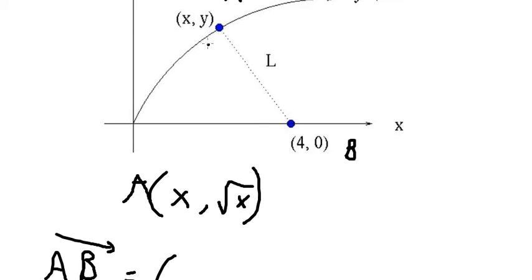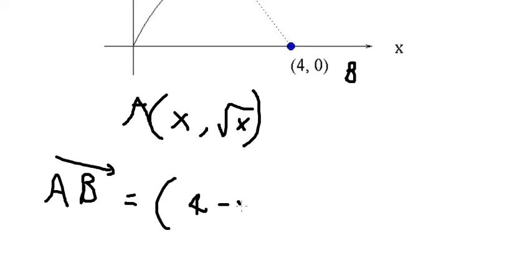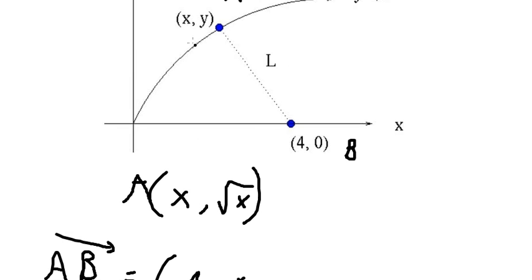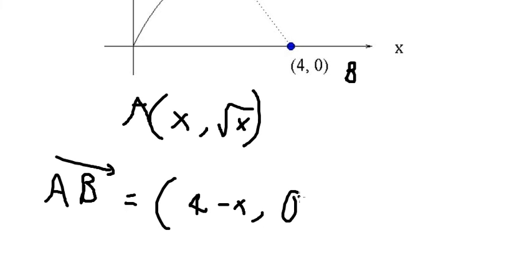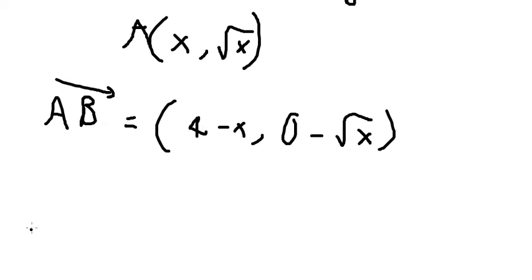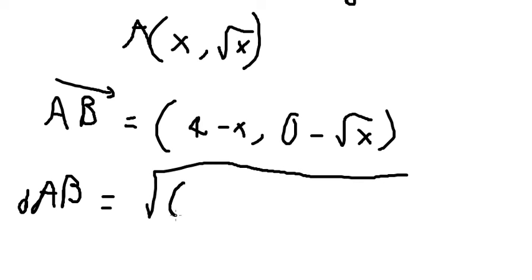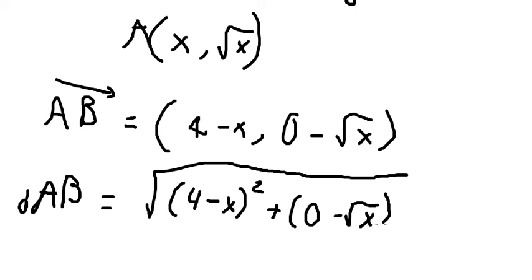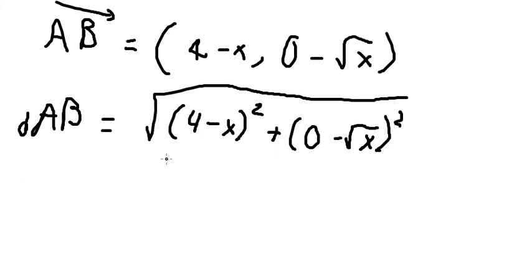So vector AB has components (4 minus S, 0 minus √S). If we put this into the distance formula, AB equals the square root of (4 minus S) squared plus (0 minus √S) squared. This is the formula to calculate the distance of vector AB. Now we concentrate on this function.